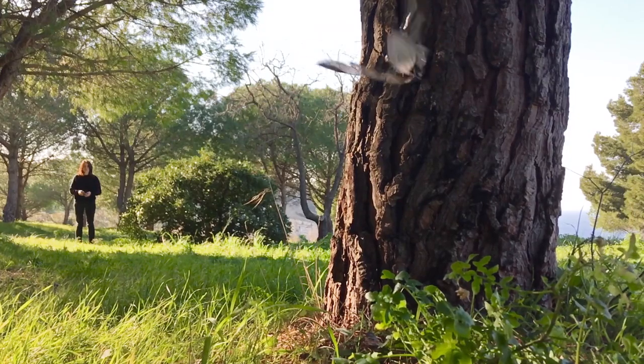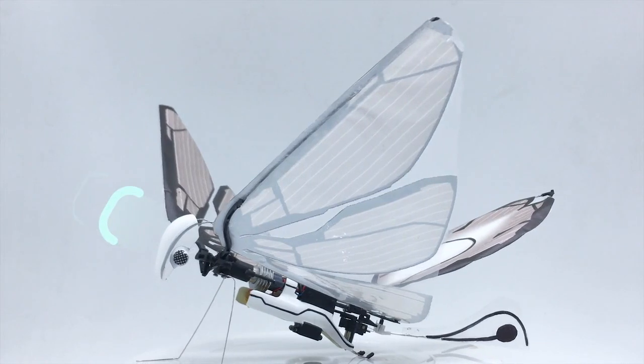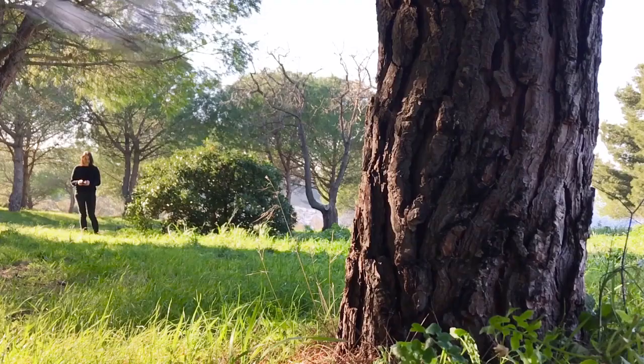Oh, and don't worry about crashing. Metafly has elastic wings and legs in addition to both front and back bumpers to protect its body. Take that tree.